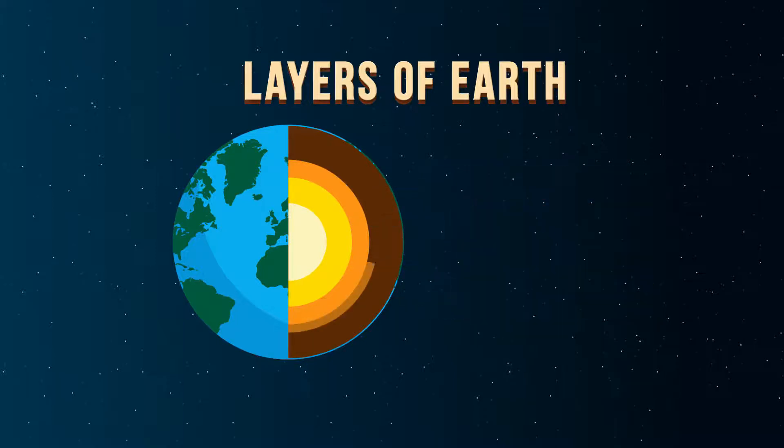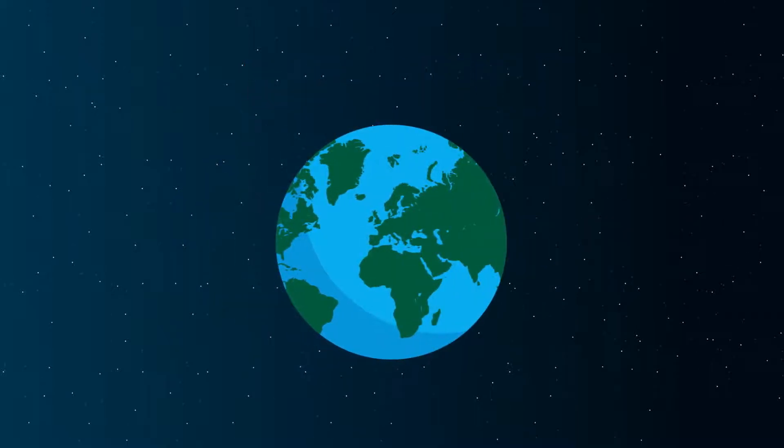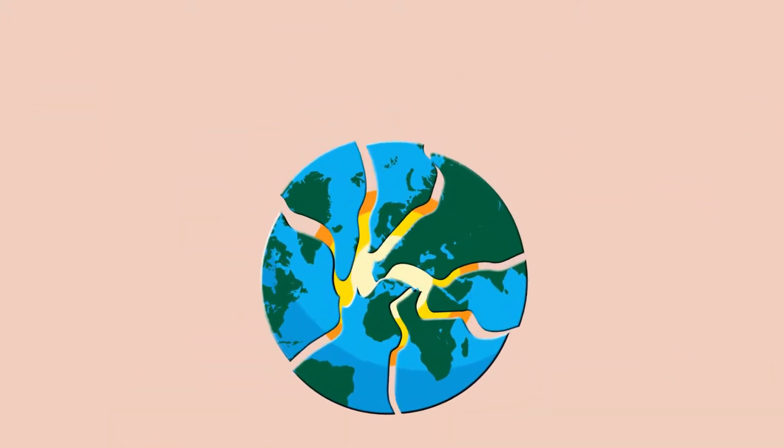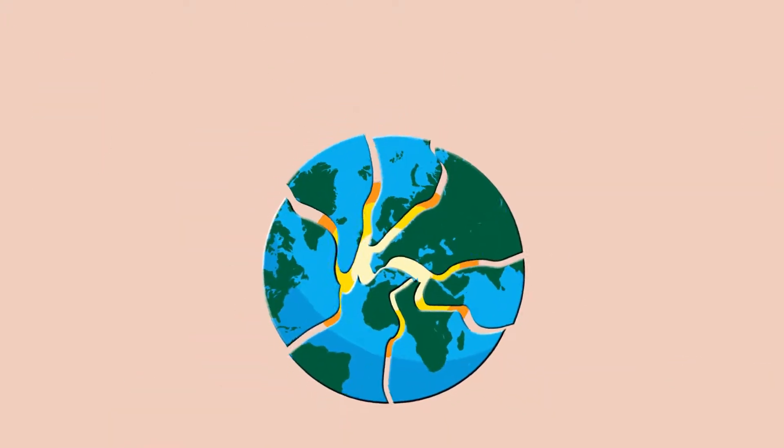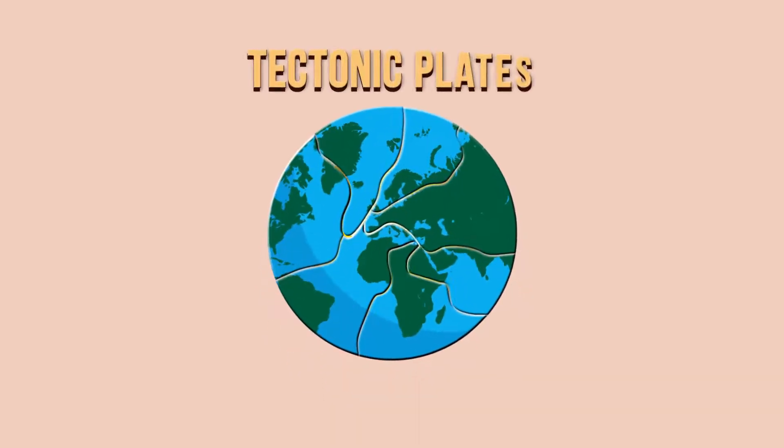The area between the upper layer of the mantle and the crust is called the lithosphere. The lithosphere isn't a continuous piece that wraps around the whole Earth. It's actually made up of giant puzzle pieces of rocks called tectonic plates.